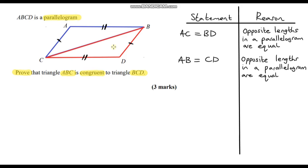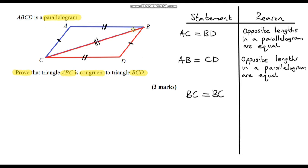We just need one more thing to complete our proof. Length BC is part of both triangles — it's part of the blue triangle and also part of the red triangle. So BC equals BC. It seems obvious, but we need to write it down. The reason is that it is the same line. We've now found three corresponding side lengths that are equal.